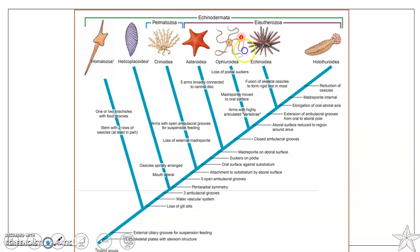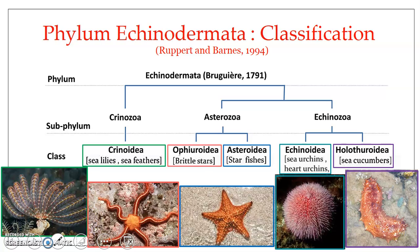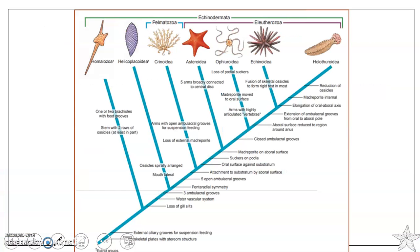Echinodermata were divided into two subphyla, Pelmatozoa and Eleutherozoa, in earlier classification. But the present classification, widely accepted as per Rupert and Barnes, divides Echinodermata into three subphyla. In this phylogenetic picture, Pelmatozoa and Eleutherozoa were the subphyla as per the earlier classification.